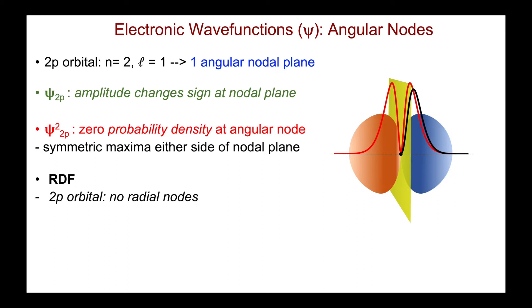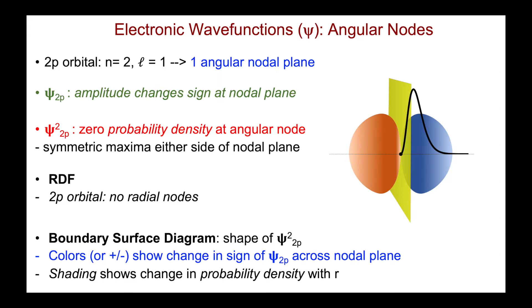For the RDF, from before, we know that there are no radial nodes. So here's the RDF for the 2p orbital. And so now my boundary surface diagram, which gives the shape of psi squared, shown here.